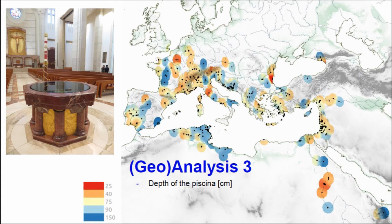The last analysis was the depth of the piscina — the bathing cube inside the baptistery — which varies in depth. We were told this could affect rituals, with deeper piscinas having slightly different rituals from shallower ones. We looked for spatial patterns in depth and found that, for example, northern Africa has deeper piscinas than France and other regions.